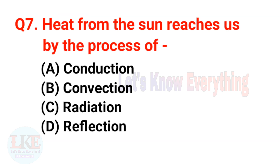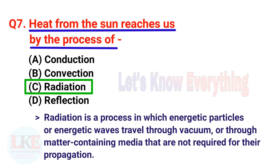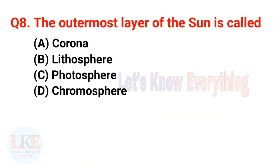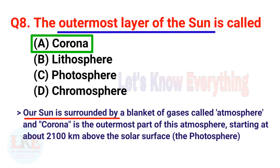Question 7: Heat from the sun reaches us by the process of radiation. Radiation is the process in which energetic particles or waves travel through vacuum or through matter, not requiring a medium for propagation. Question 8: The outermost layer of the sun is called the Corona. Our sun is surrounded by a blanket of gases called the atmosphere, and the Corona is the outermost part of this atmosphere, starting at about 2100 kilometers above the solar surface.